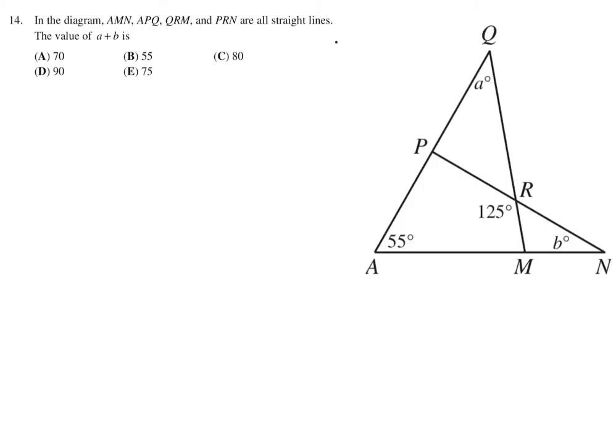In the diagram, AMN, APQ, QRM, and PRN are all straight lines. The value of A plus B is. So many ways to approach this. This angle is 125, right? So all the angles about a line are equal to 180. So this angle in here plus 125 has to be 180. So therefore that angle is 55. Now this angle in here is opposite to 55 and therefore it will be the same. Alright? So, so far, no tricks.